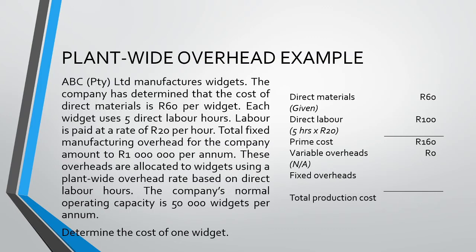It is very important to note that this 4 Rand is per direct labor hour. So when we come back to finalize our product cost, we can't just put the 4 Rand in here, because it is not per unit but rather per direct labor hour. To get the cost per unit, we need to take the 4 Rand per direct labor hour and multiply it by the 5 direct labor hours per widget, to get a fixed overhead cost per unit of 20 Rand. We can then add this 20 Rand onto the prime cost of 160 Rand to arrive at the total production cost of 180 Rand per widget.